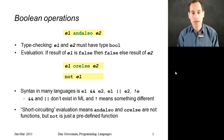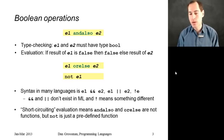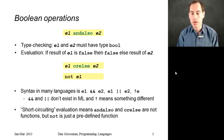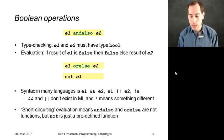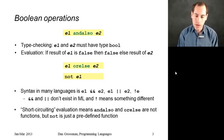Similarly, we have orelse, where we evaluate E1 — if we get true, that's the result for the whole thing and we never evaluate E2. Otherwise, we evaluate E2 and that's the result for the whole thing. And we have a function not that evaluates E1 — if you get true, the result is false, and if you get false, the result is true.